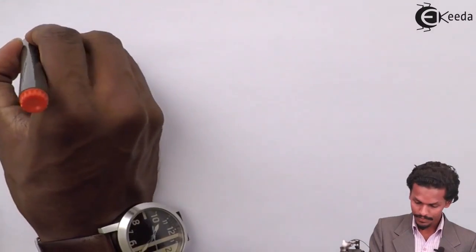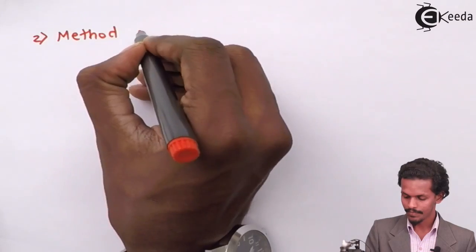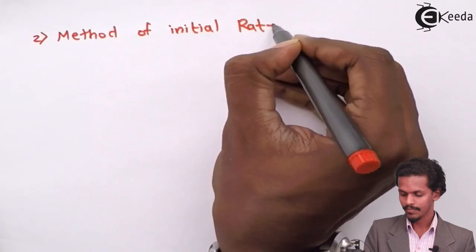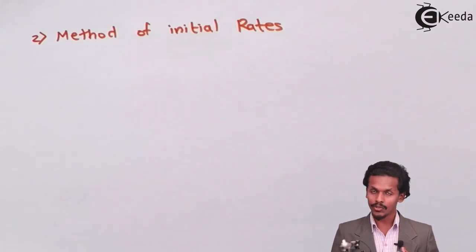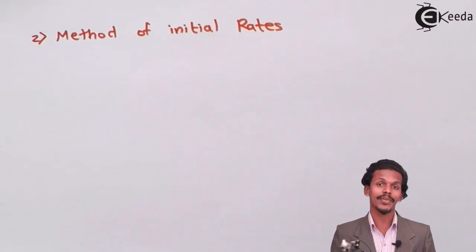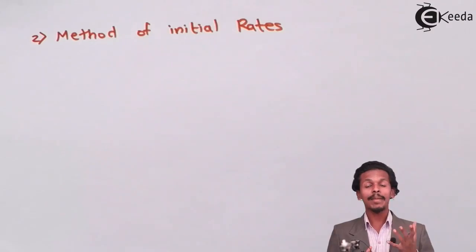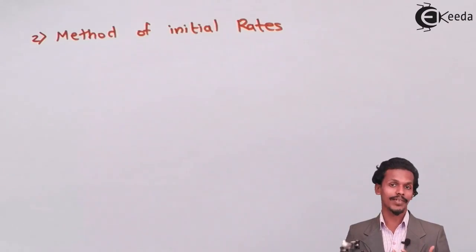Now moving towards the next method — the method of initial rates. This is very similar to the earlier isolation method. The key difference is that we draw a graph to determine the value of X and Y. The same isolation principle is applied in this theory.